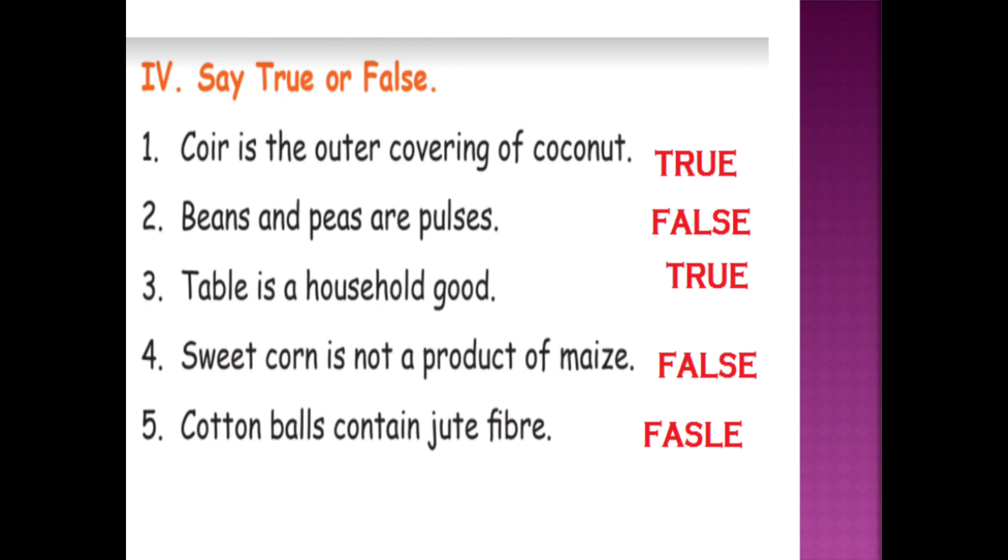Say true or false. First one: coir is the outer covering of coconut. True. Beans and peas are pulses. False. Table is a household good. True. Sweet corn is not a product of maize. False. Cotton balls contain jute fiber. False.